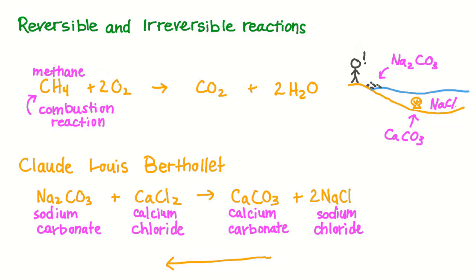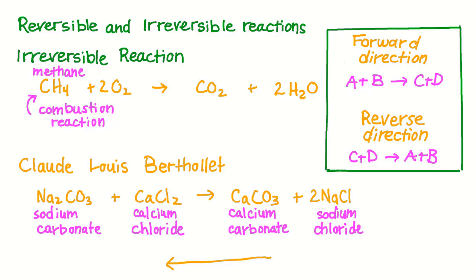As it turns out, there are many reactions that don't just go in the forward direction where the reactants combine to form the products. There are many reactions that can go in the reverse direction as well, where the products can combine to form the reactants. When the reaction can only go in the forward direction, like the combustion of methane, it's called an irreversible reaction. But when the reaction goes both in the forward and the reverse direction, we call it a reversible reaction.